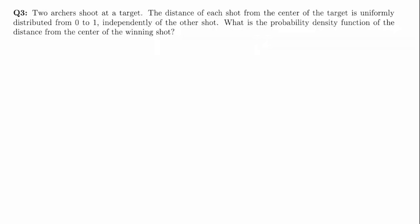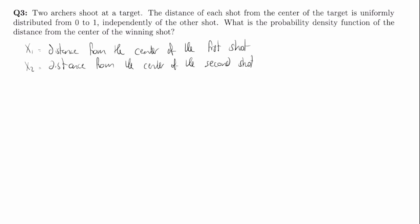For our last problem, we have two archers shooting at a target. The distance of each shot from the center of the target is uniformly distributed from zero to one, independently of the other shot. We want to find the probability density function of the distance from the center of the winning shot. Let's define X1 and X2 as the distances from center of the first and second shots, so the winning shot distance is X = min(X1, X2).